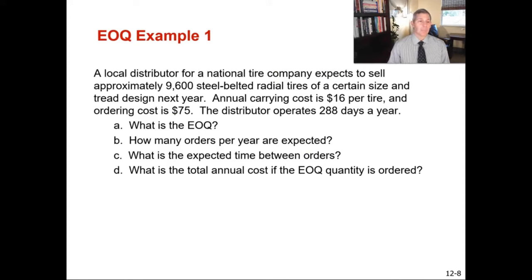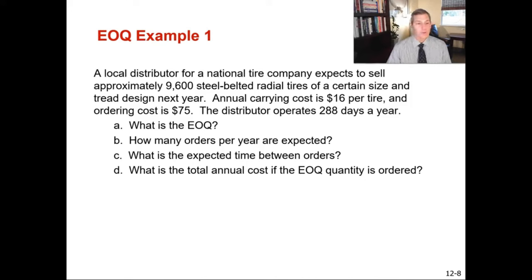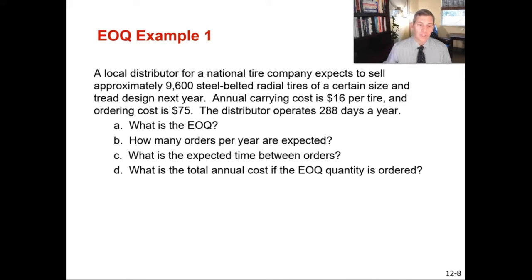Let's do an example. A local distributor for a national tire company expects to sell approximately 9,600 steel-belted radial tires of a certain size and tread design next year. Annual carrying costs are $16 per tire and ordering costs are $75. The distributor operates 288 days per year. We want to calculate: the economic order quantity, how many orders per year are expected, the expected time between orders, and the total annual cost if the EOQ is ordered.